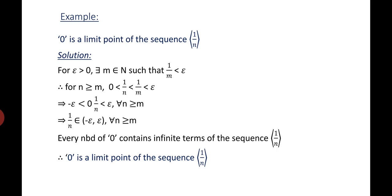Let's consider an example. We say 0 is the limit point of the sequence 1/N. For epsilon greater than 0, there exists M in the natural numbers such that 1/M < epsilon. Therefore, for N greater than or equal to M, we have 0 < 1/N < 1/M < epsilon.